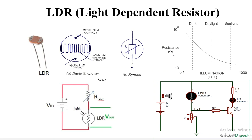Welcome to the lecture. Today we are going to look at LDR — what is an LDR? It is a light dependent resistor. Here you can see the symbol of LDR. This patch is where the actual working of the LDR lies, and that patch is enlarged here. This track is a cadmium sulfide track. The top layer has a metal film contact with this cadmium sulfide track. This is the symbol for LDR.